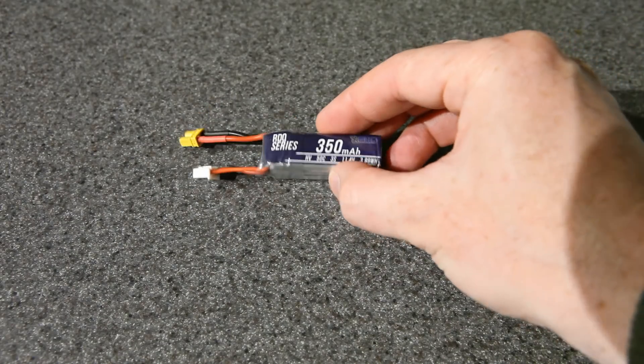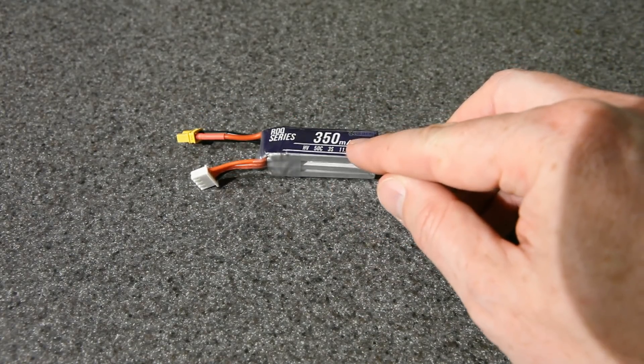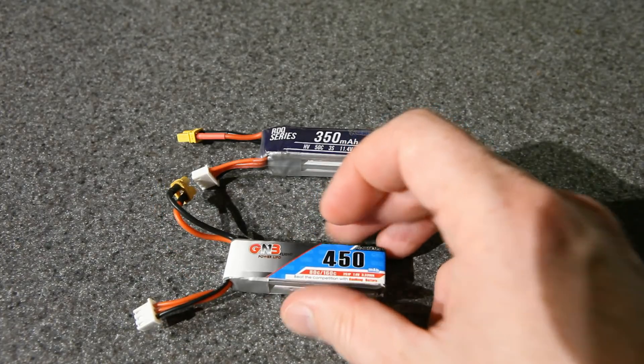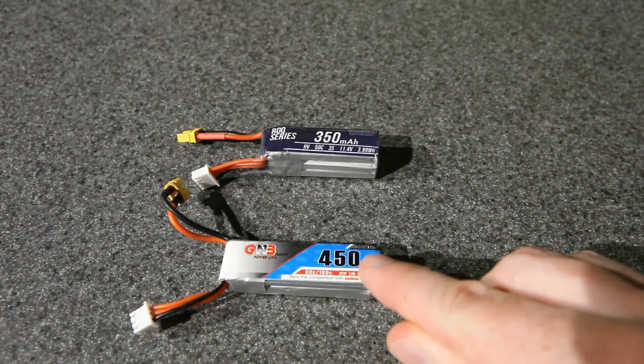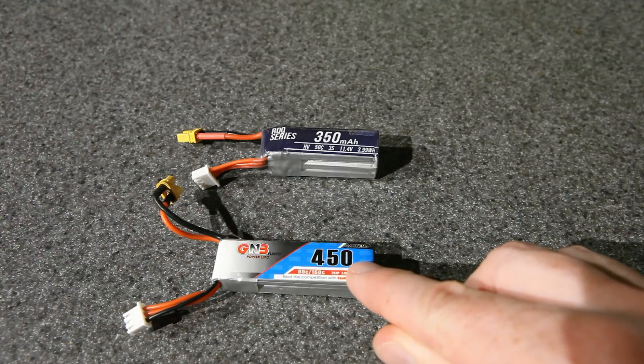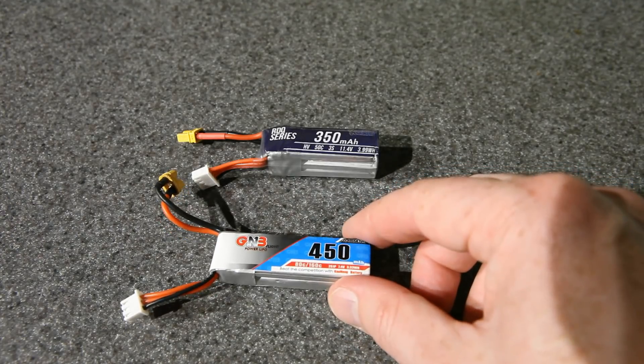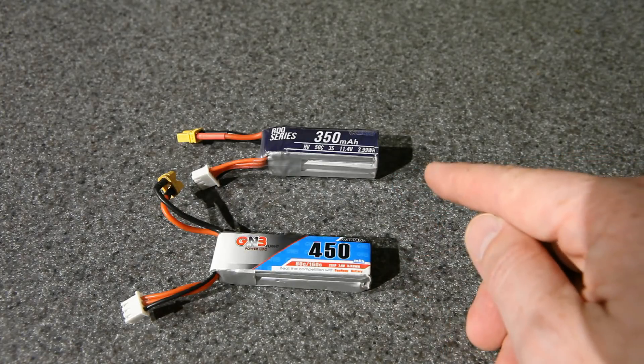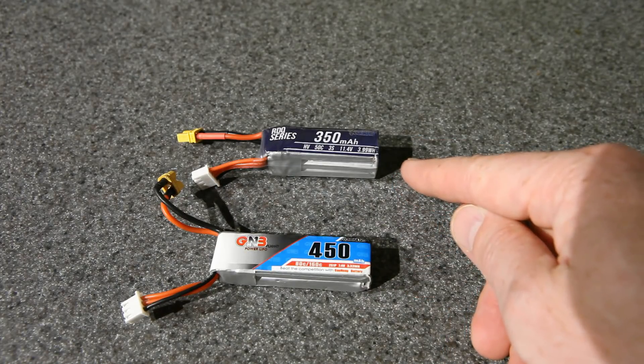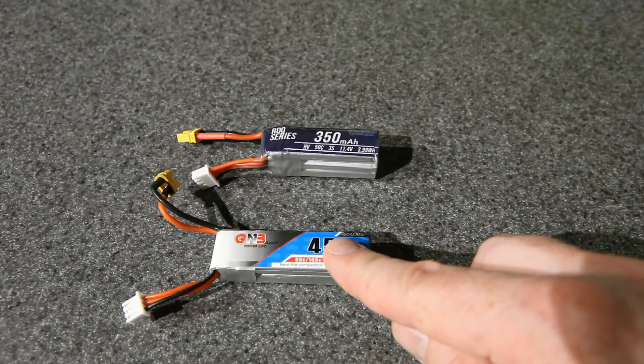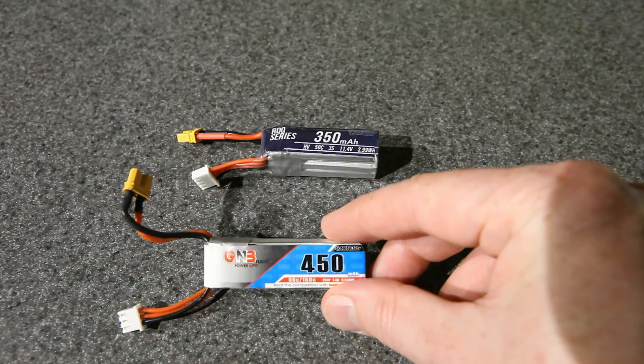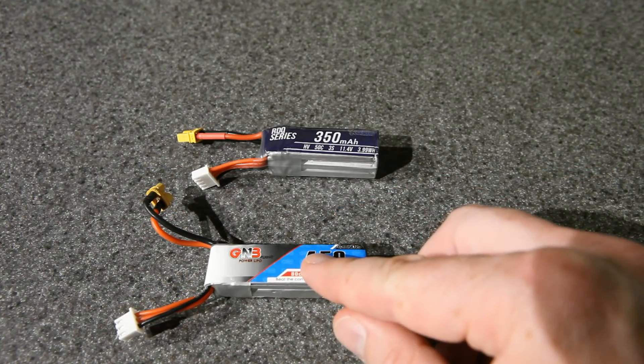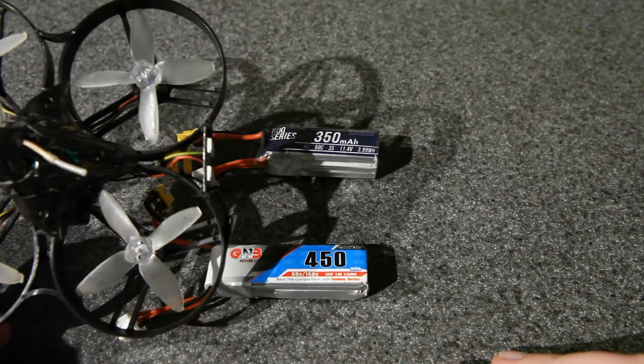I also picked up this 350 milliamp hour version. It has a slightly higher C rating, and it's 28 grams. 28 grams happens to be the same weight as this 450 milliamp hour 80C GNB battery, so it'll be interesting to see how these two batteries compare 2S versus 3S, this 80C battery versus this 50C battery. The quality of this battery is really pretty incredible. If you're looking for a powerful 2S battery for ripping around outside, I can't recommend this battery enough, and it works great on a build like this.